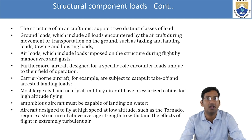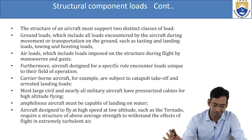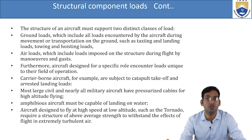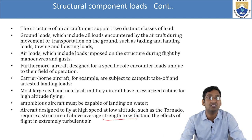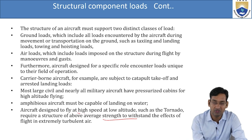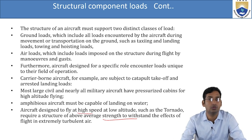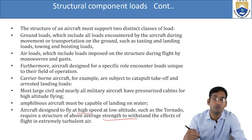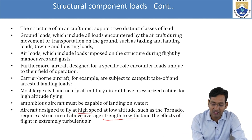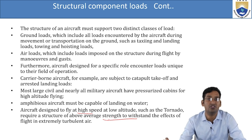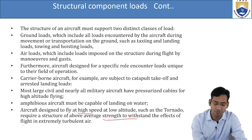Amphibious aircraft can land on water as well as on land. Aircraft designed to fly at high speed at low altitude, such as the Tornado, require a structure of above-average strength to withstand the effect of flight in extremely turbulent air. Near the surface pressure is higher, and since speed is too high and altitude is lower, the turbulent effect is extreme.